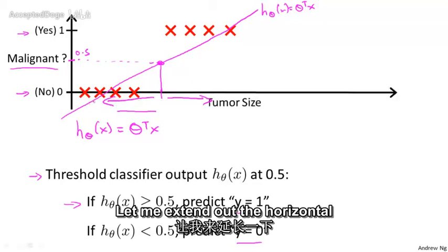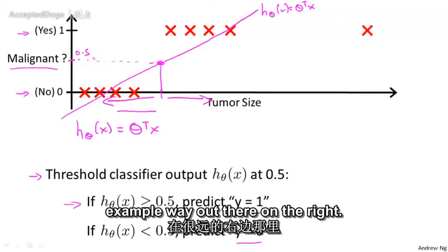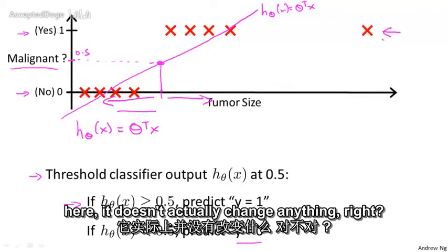But now let's try changing the problem a bit. Let me extend out the horizontal axis a little bit, and let's say we got one more training example way out there on the right.